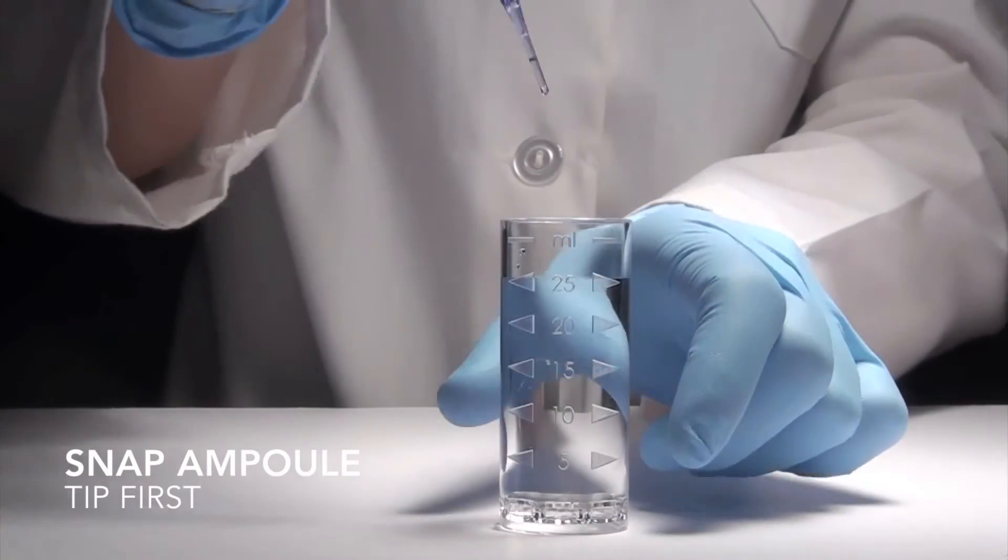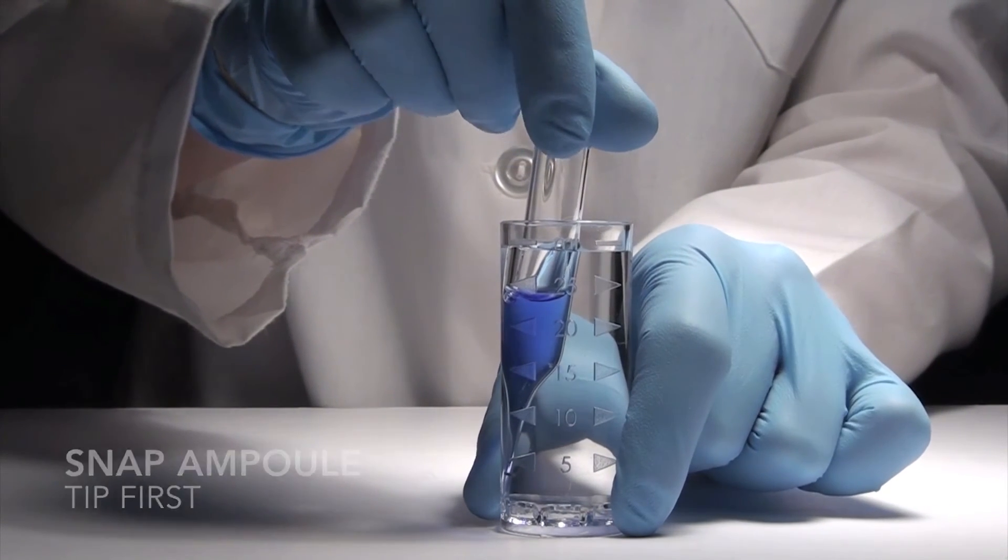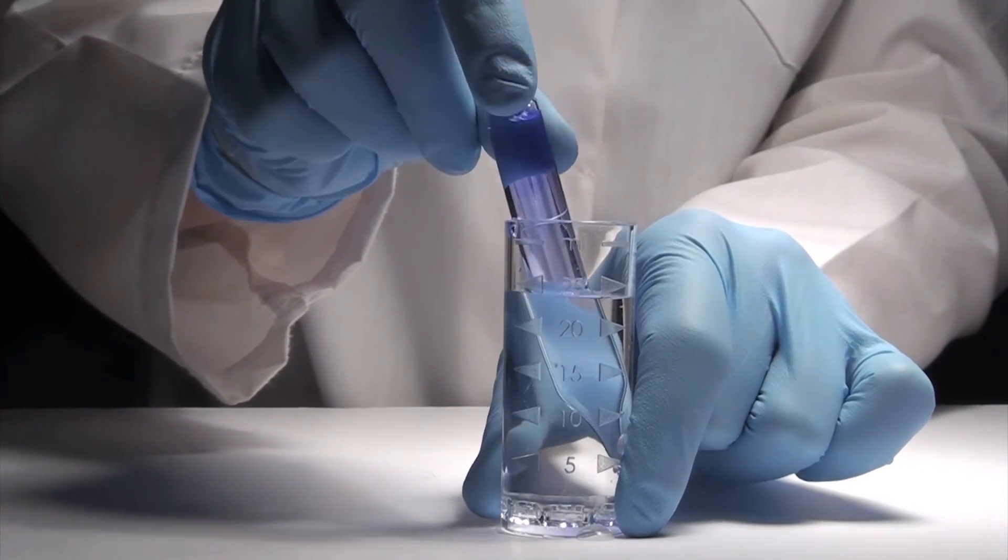Immediately place the vacuvial ampoule from which the reagent blank value was generated, tip first, into the sample cup. Snap the tip. The ampoule will fill, leaving a bubble for mixing.